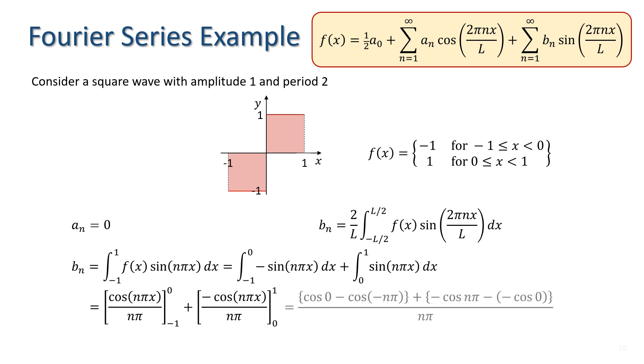This gives cos of 0 minus cos of minus n pi plus minus cos n pi minus minus cos of 0, all divided by n pi.